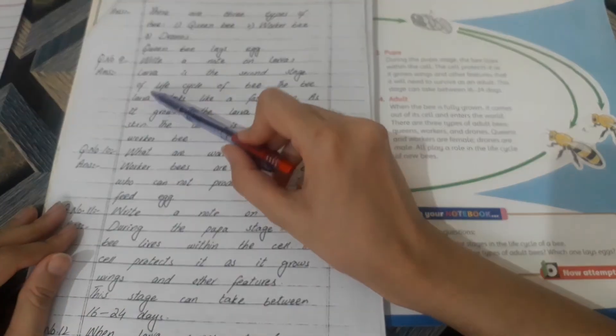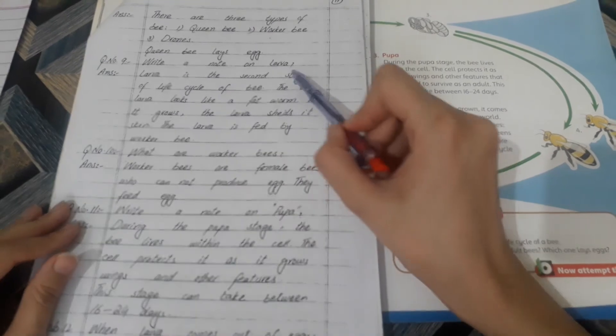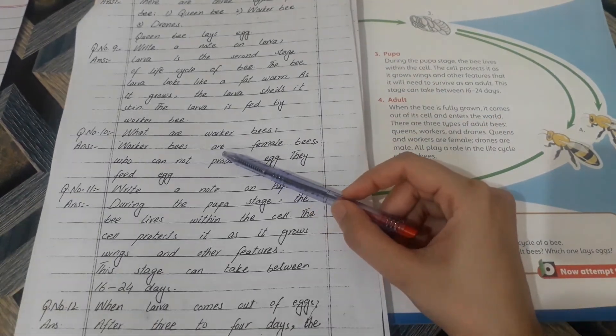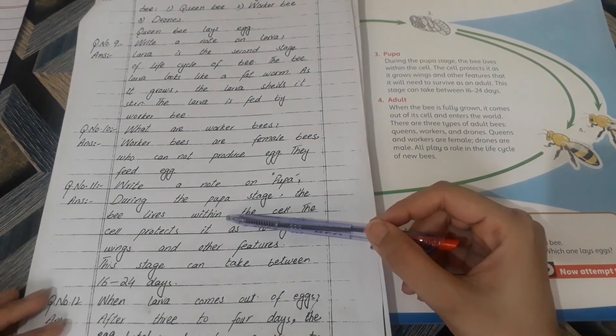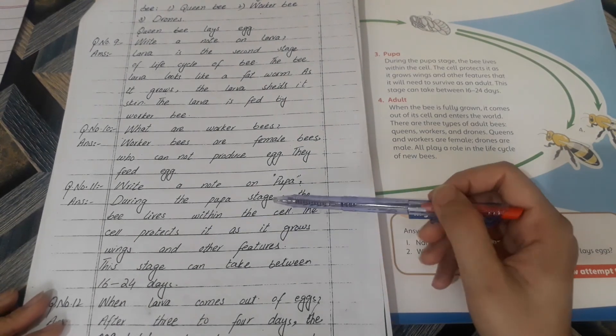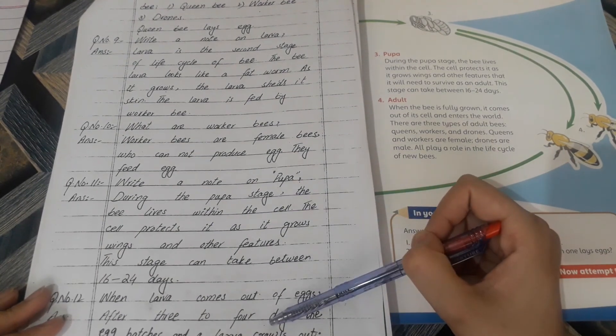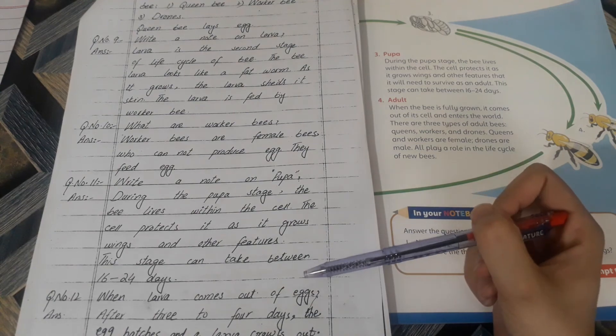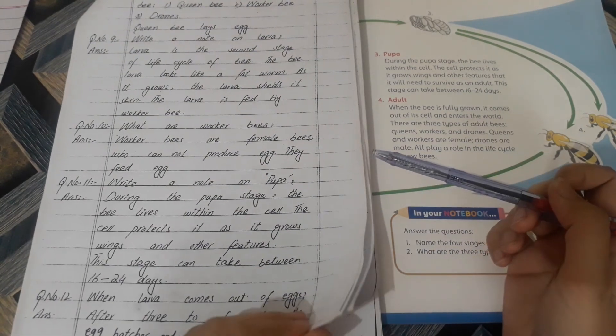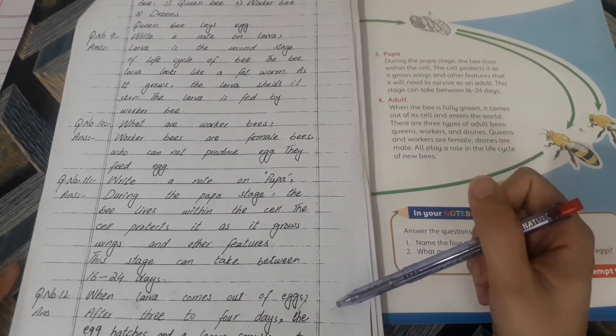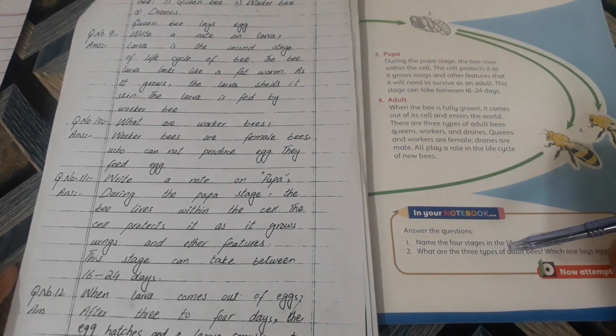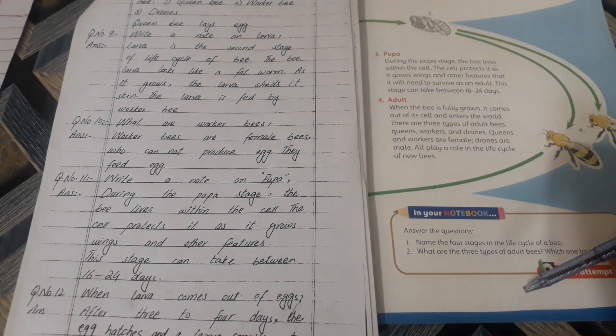Question number nine: What are the worker bees? Question number eleven: Write a note on pupa. Next one: When does larvae come out of the eggs? Students, you will learn these questions because these are related to your topic and your unit has been completed. Thank you.